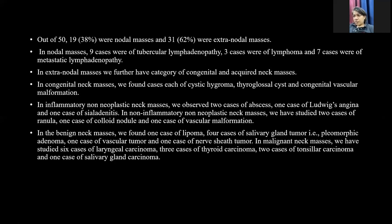In nodal masses, 9 cases were of tubercular etiology, 3 were of lymphoma, and 7 cases were of metastatic lymphadenopathy from various head and neck cancers. In extranodal masses, we further had categories of congenital and acquired neck masses. In congenital neck masses, we found cases of cystic hygroma, thyroglossal cyst, and congenital vascular malformation. In inflammatory non-neoplastic neck masses, we observed two cases of abscesses, one case of Ludwig's angina, and one of sialadenitis. In non-inflammatory neoplastic neck masses, we studied two cases of goiter, one case of colloid nodule, and one case of vascular malformation.